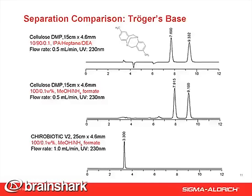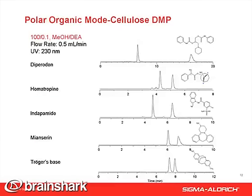Another example on a different phase. Normal phase and polar organic phase work on the Cellulose DMP column, but not the Chirobiotic V2 in polar organic mode. This slide also shows examples of good separation in polar organic mode with 100% methanol and DEA as an additive on Cellulose DMP. They are all diverse basic molecules, and as you can see, they all separate very well.